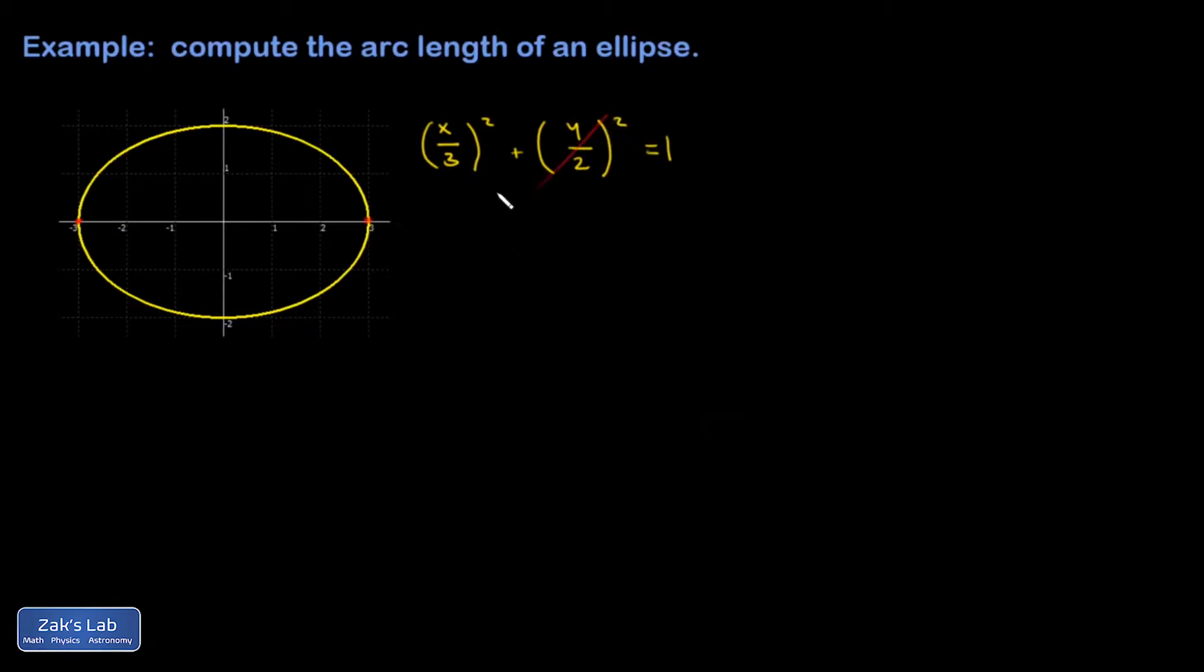And I get x over 3 squared equals 1. Take the square root, x over 3 is plus or minus 1, multiply by 3, x is plus or minus 3. So I see that this thing intersects the x-axis at negative 3 and 3.